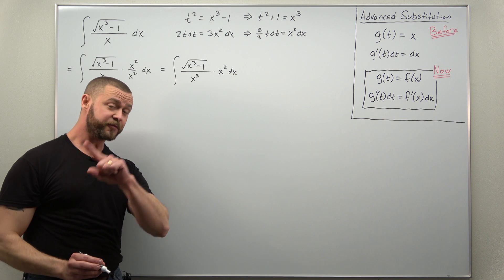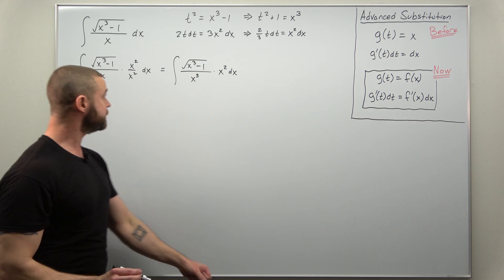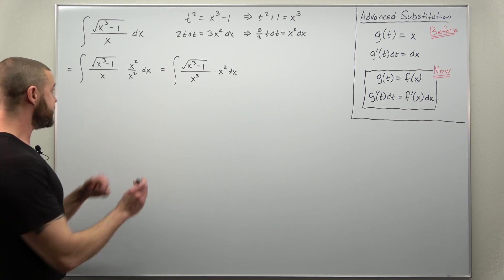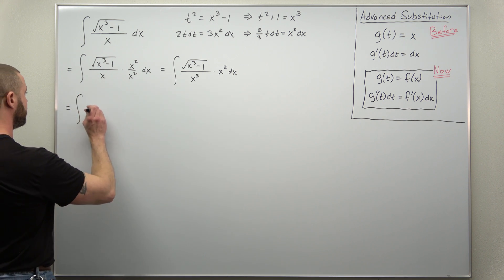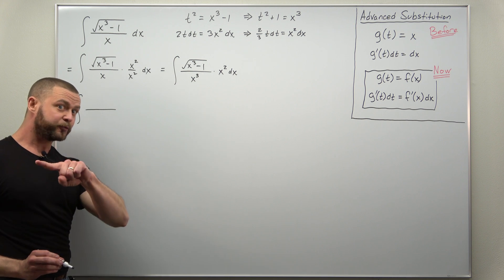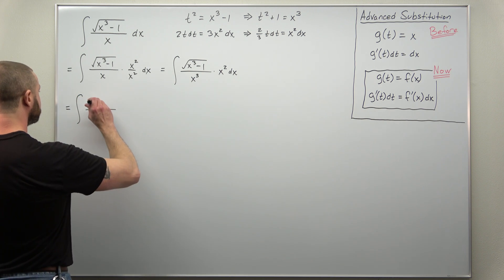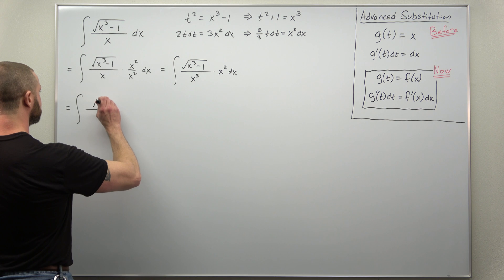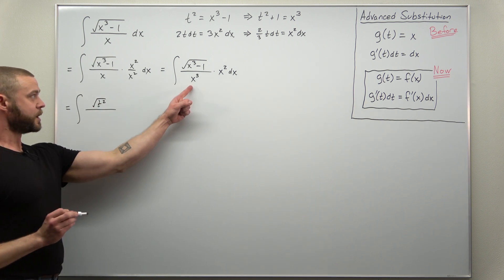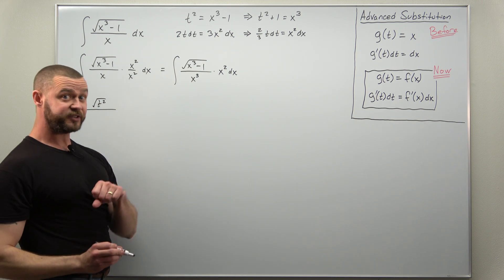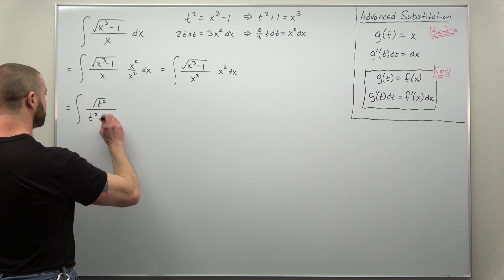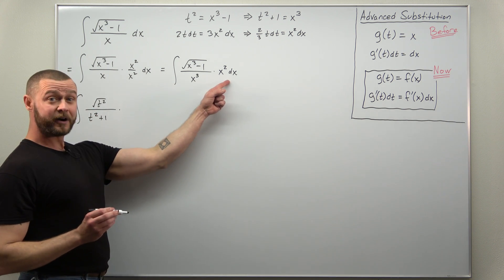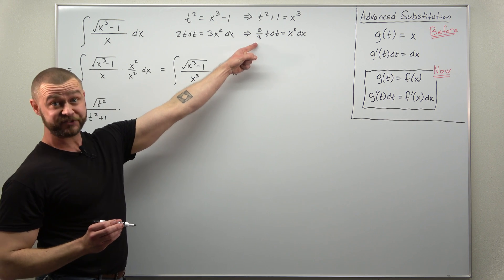All right now the conversion from x to t should be really simple. Let's go ahead and convert everything here. The square root we're going to get the square root of now t squared. Your denominator x cubed that converts to t squared plus 1. And x squared dx that converts to two-thirds t dt.